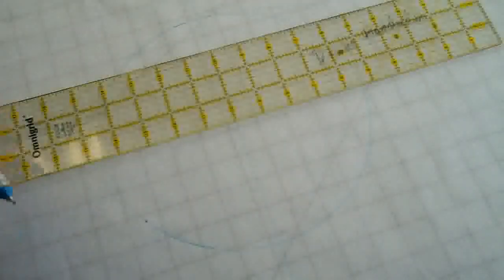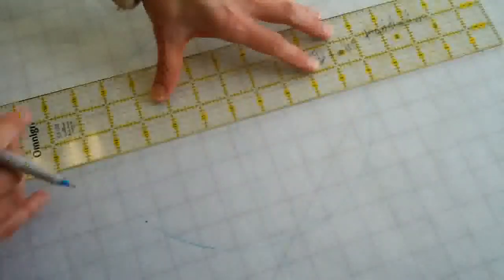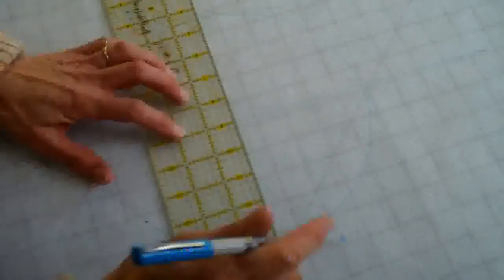What I do first is make 90 degree markings. I use this ruler to make a straight line. I line this up like this to get a 90 degree angle.